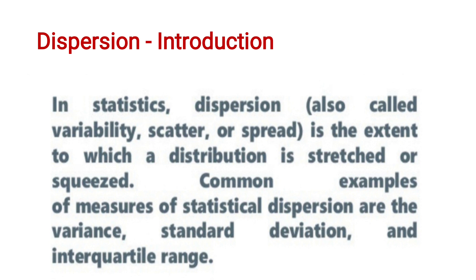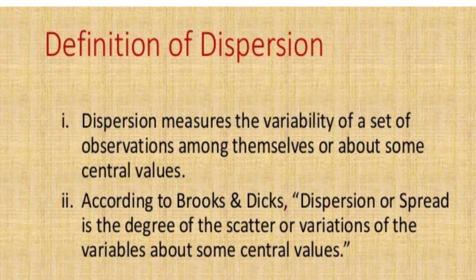I have given two to three definitions. Whichever definition is easy for you, you can write for two marks. Definition of dispersion: dispersion measures the variability of a set of observations among themselves or about some central value. For example, a central value like the mean.